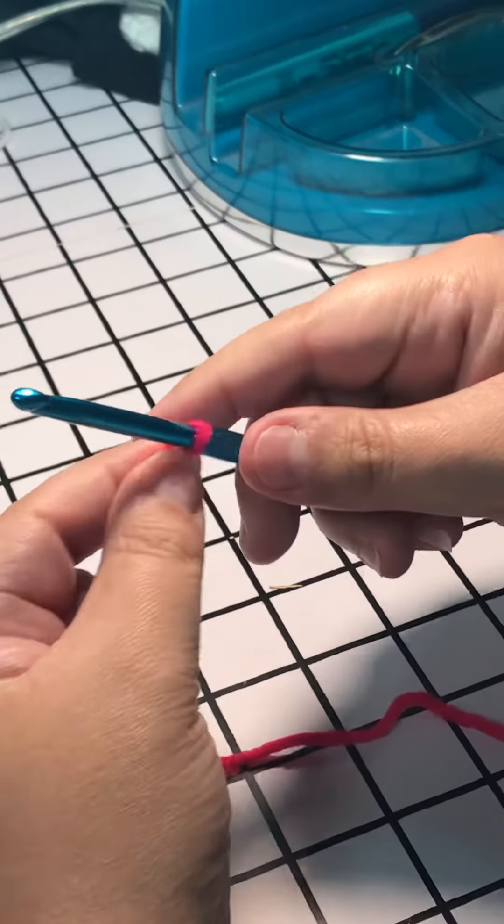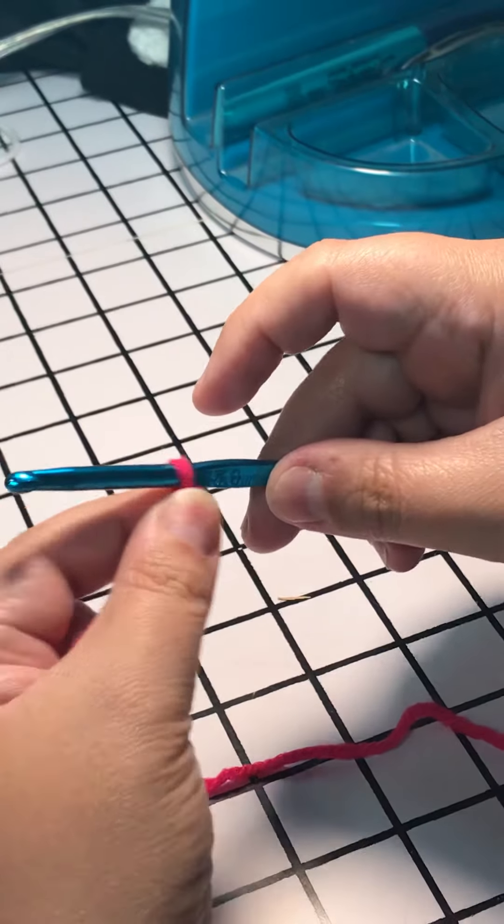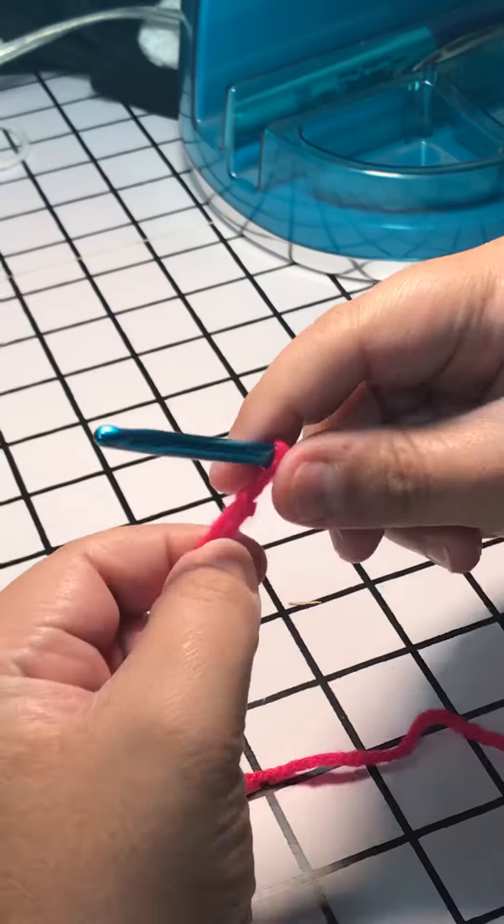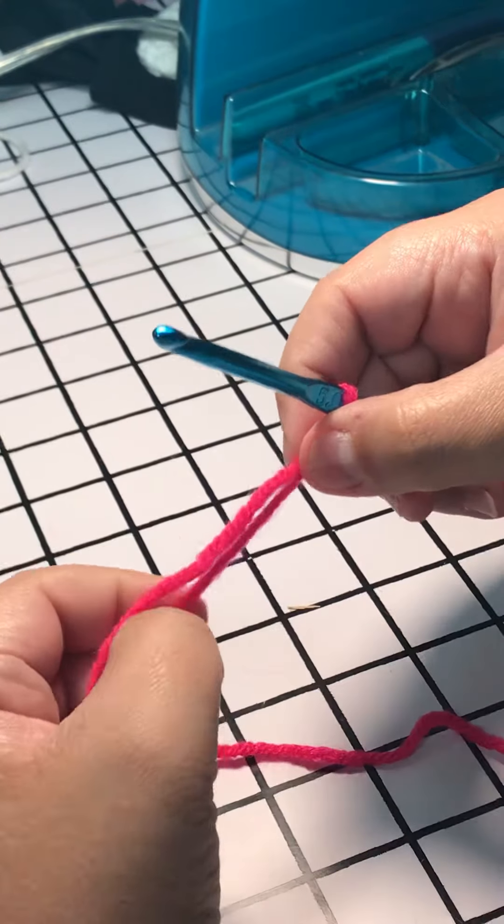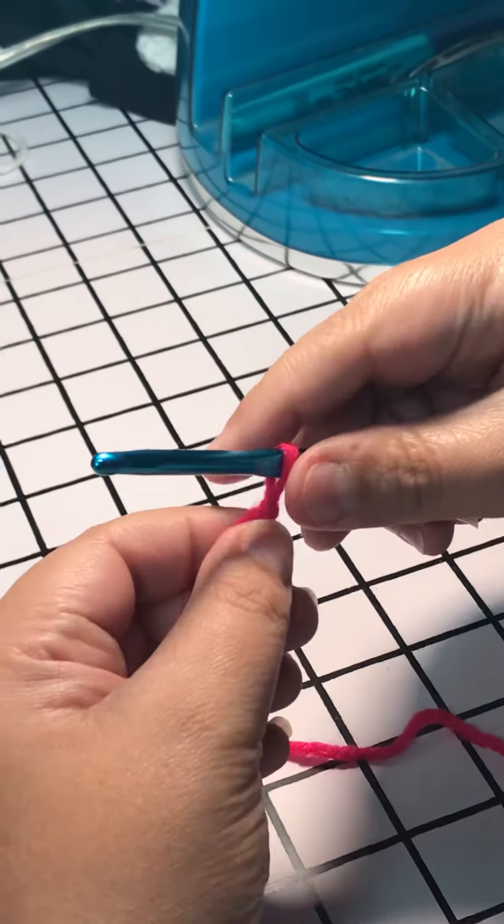If you move it back and forth on the hook, you can feel that it moves freely without any tension. What's nice about this is you can tighten it a little bit so that way it's not as loose on your hook.